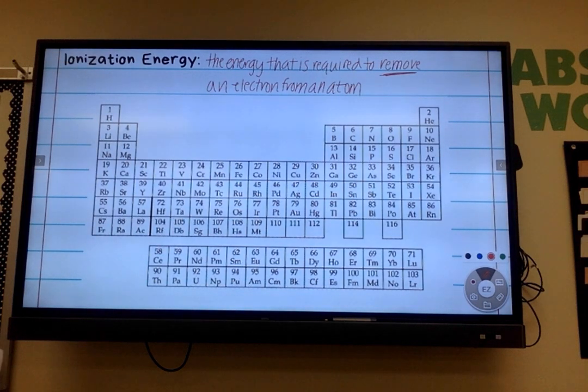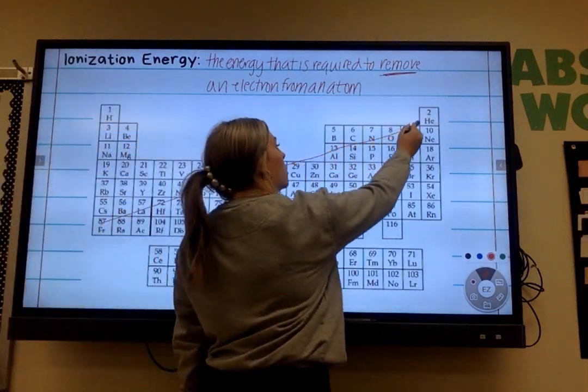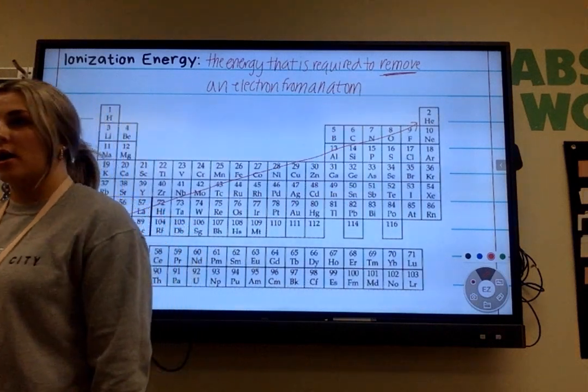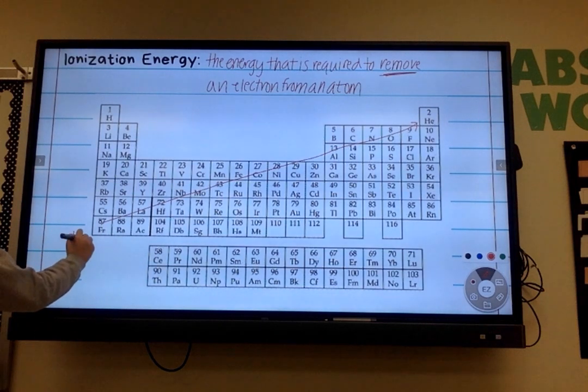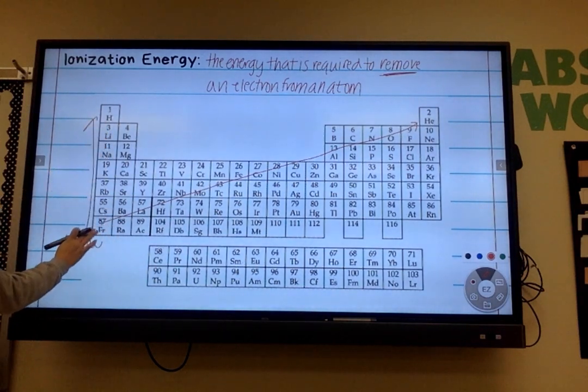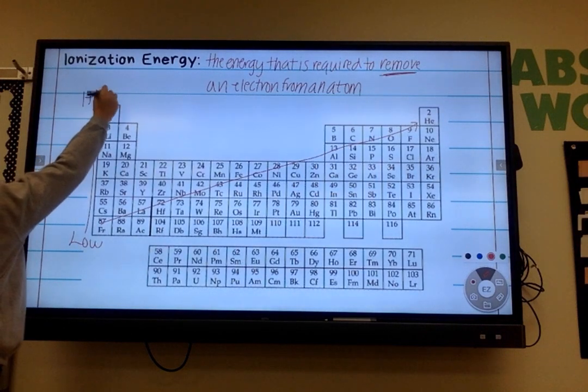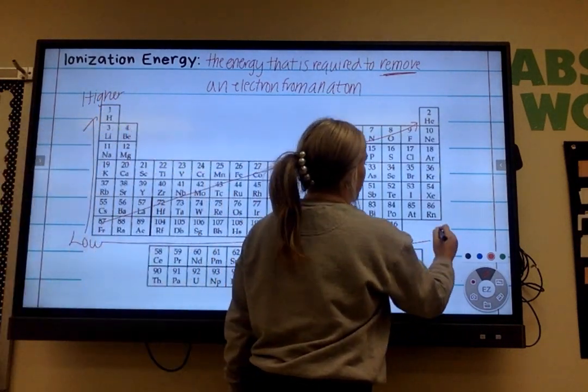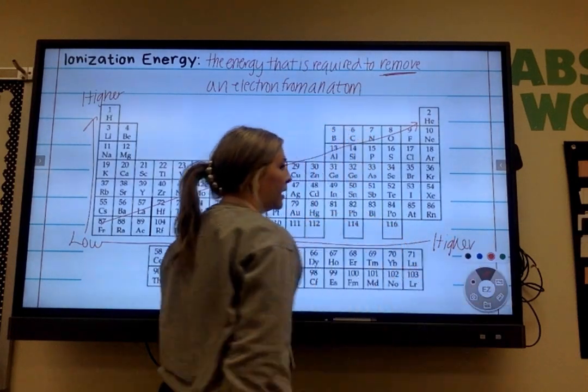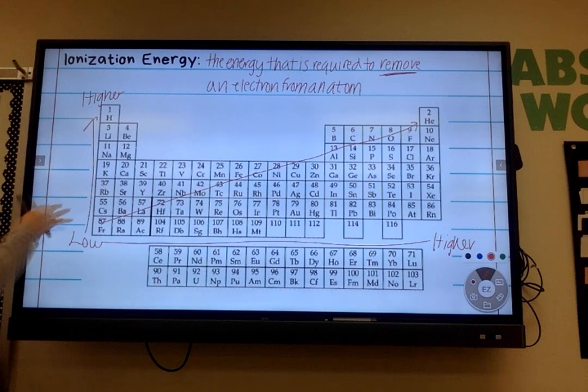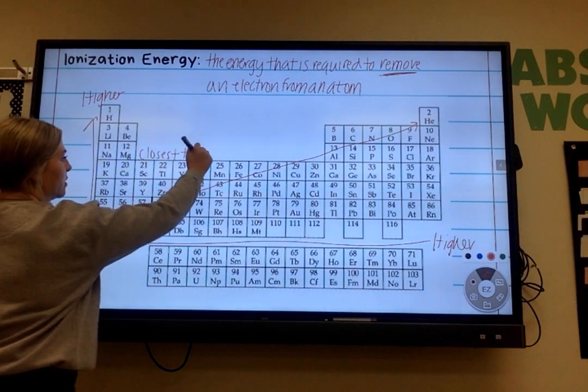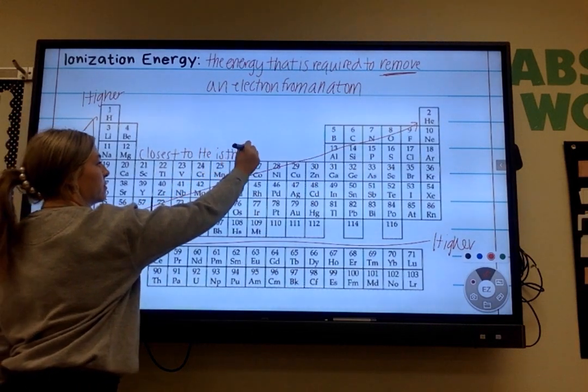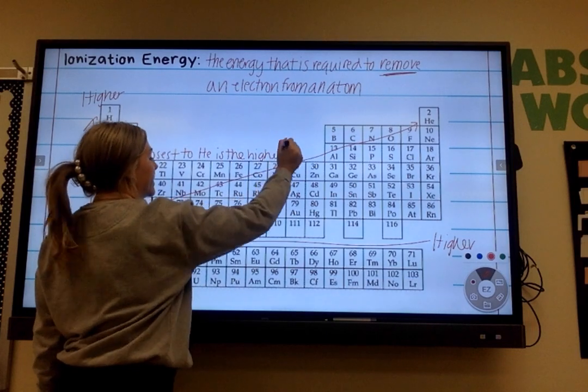The trend for ionization energy is very similar to the trend for electronegativity. We are still going up, except now we are going all the way to helium. The noble gases are a thing for ionization energy. Same thing. Low is this bottom left corner with francium. And as we go up, it gets higher. So just like fluorine was our highest electronegative thing, I want you to write that the closest an element is to helium is the highest in ionization energy.